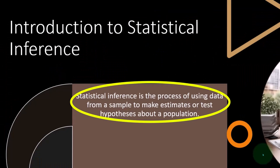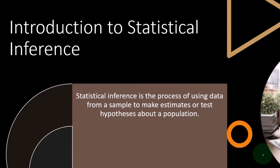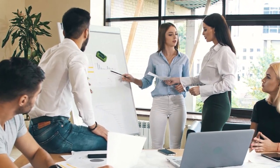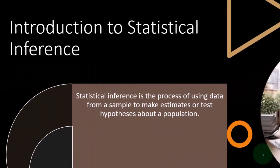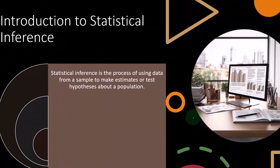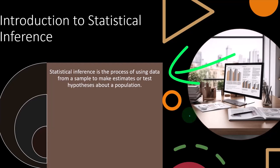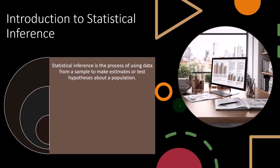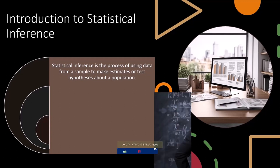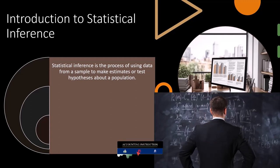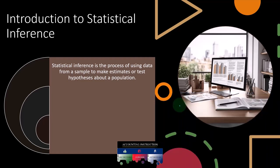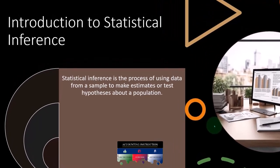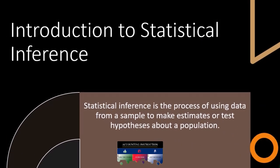...data from a sample to make estimates or test hypotheses about a population. You will recall from prior presentations, we talked about two major buckets or categories of statistics. The first bucket is where we know all the information — we have all the data. Our goal is to try to organize that data in such a way that we can draw meaning from it, using tools like calculating the average or mean, the median, the quartiles, and pictorial tools such as the box plot and the histogram.